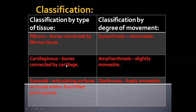The second type is the cartilaginous joint, where bones are connected by a cartilage pad — there is a layer of cartilage between two bones. This type of joint is called amphiarthrosis, as it permits slight movement, allowing only a small degree of movement. The third type is the synovial joint, where synovial fluid fills the space between the articulating surfaces of two bones, enclosed within a fluid-filled joint capsule. The knee joint is an example, and it permits free movement, so it is called diarthrosis.